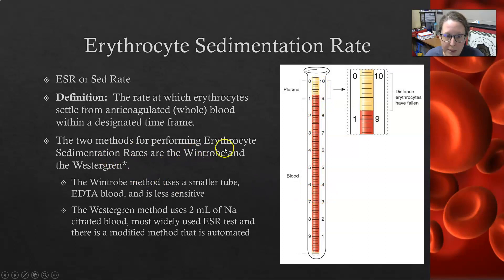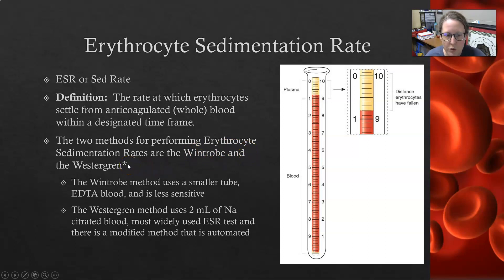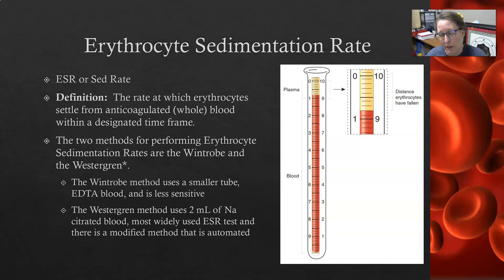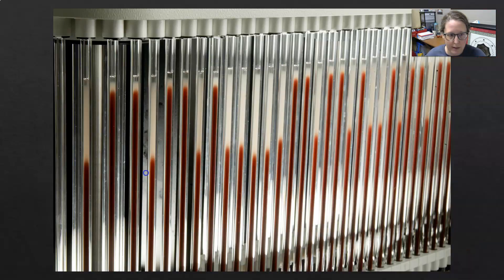There are two methods for performing the erythrocyte sedimentation rate: the Wintrobe and the Westergren method. The Wintrobe method uses a smaller or thinner tube with EDTA blood and is less sensitive. The Westergren method uses 2 ml of sodium-saturated blood and is the most widely used SED rate test. There is also a modified method that can be automated and read in less than an hour.